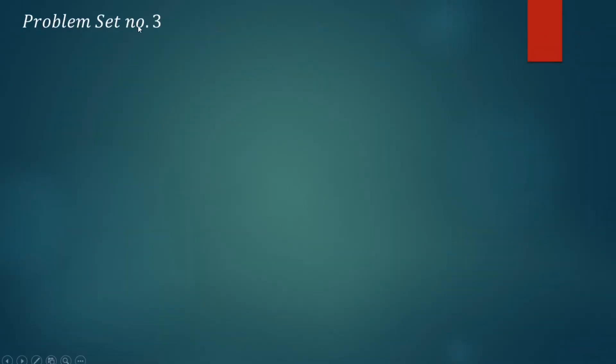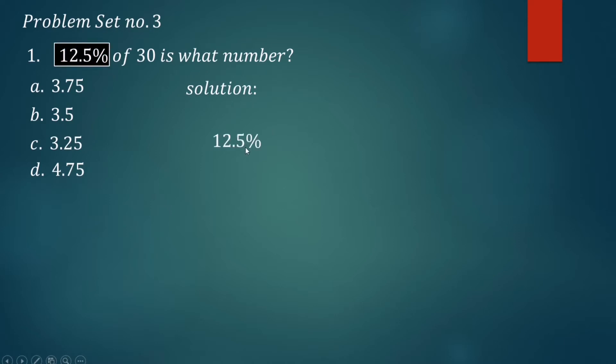This is our problem set number three. Number one: 12.5% of 30 is what number? A) 3.75, B) 3.5, C) 3.25, D) 4.75. The given percentage here is 12.5%, so we're going to change this percent to decimal.